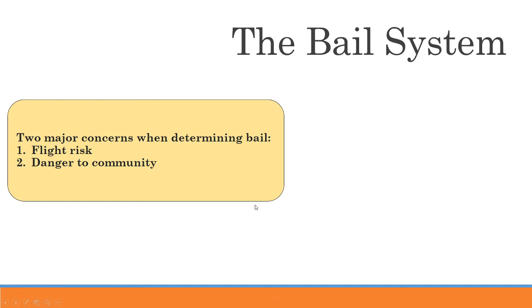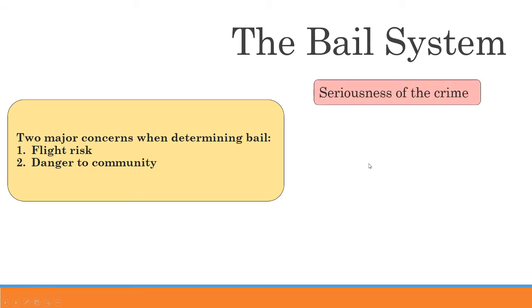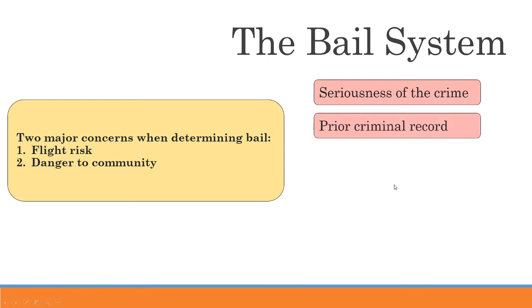When determining whether or not you should get bail, judges are going to be looking primarily at flight risk, but also at whether or not you're a danger to the community. They're going to be looking at the seriousness of the crime — the more serious the crime, the higher your flight risk. If you think you might get convicted and spend the rest of your life in prison, that might incentivize you to leave. So the seriousness of the crime is really important when setting bail.